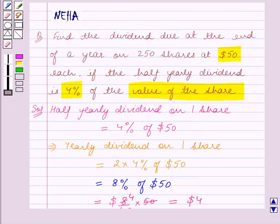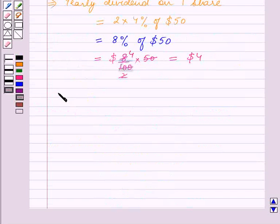We have to find the dividend due at the end of the year on 250 shares. So therefore, total dividend at the end of the year